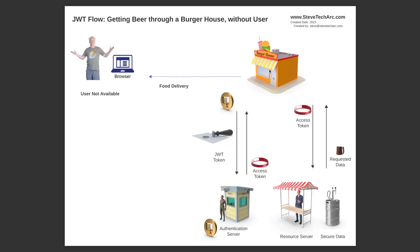You've set up the proper connected app. What will now happen is when the burger house wants to get data as Steve, it will create this sealed envelope — sticking in Steve's username or the specific ID to identify him — and it will sign that with the digital certificate. That's the seal. It will then send it on the JWT bearer token flow to the auth server. The auth server will have that reciprocal digital certificate, be able to validate the signature, and because of the trust relationship, the authentication server will issue the burger house an access token on behalf of Steve using his credentials. Any updates and changes will be flagged as the Steve user, not a single specific integration user.